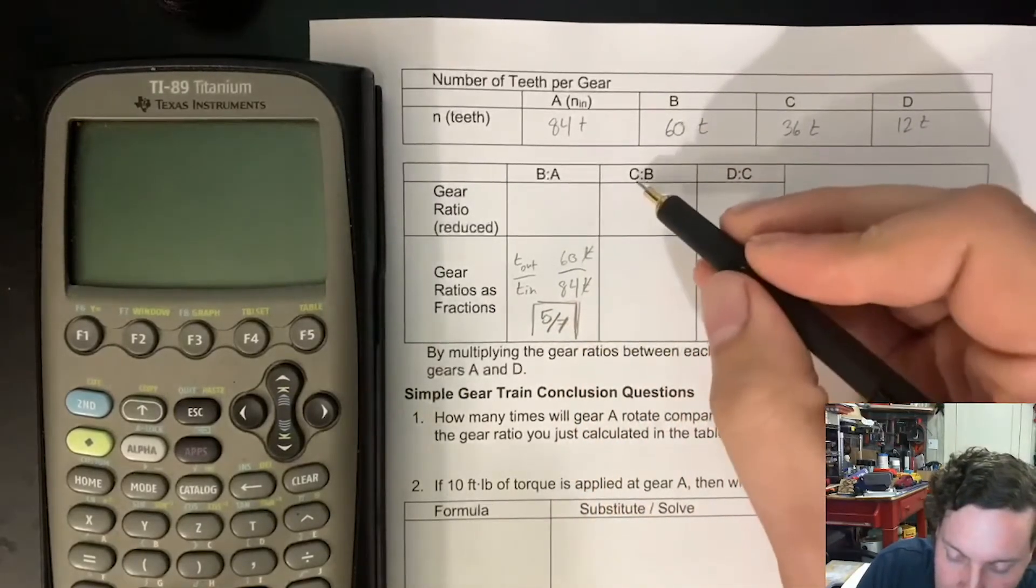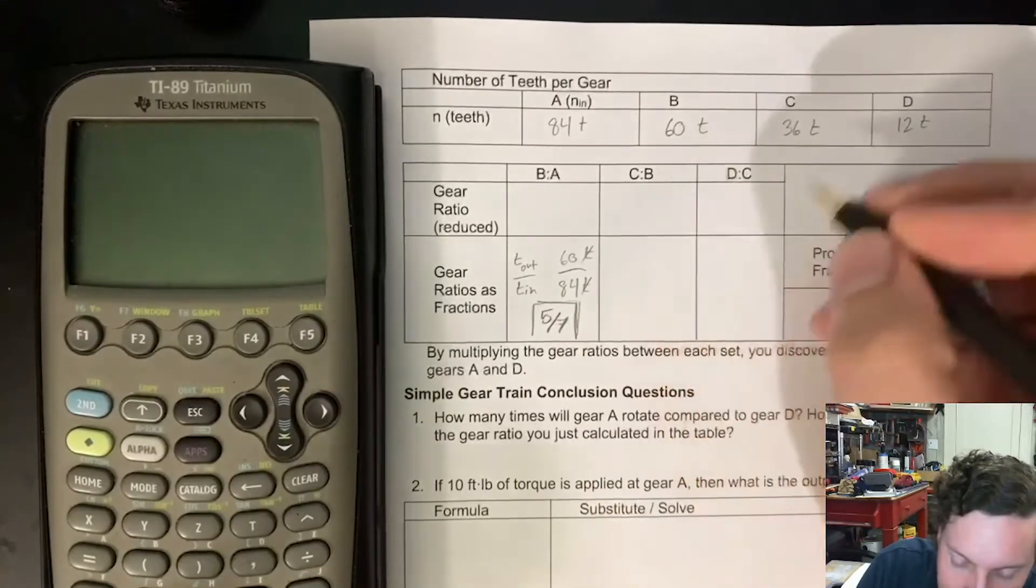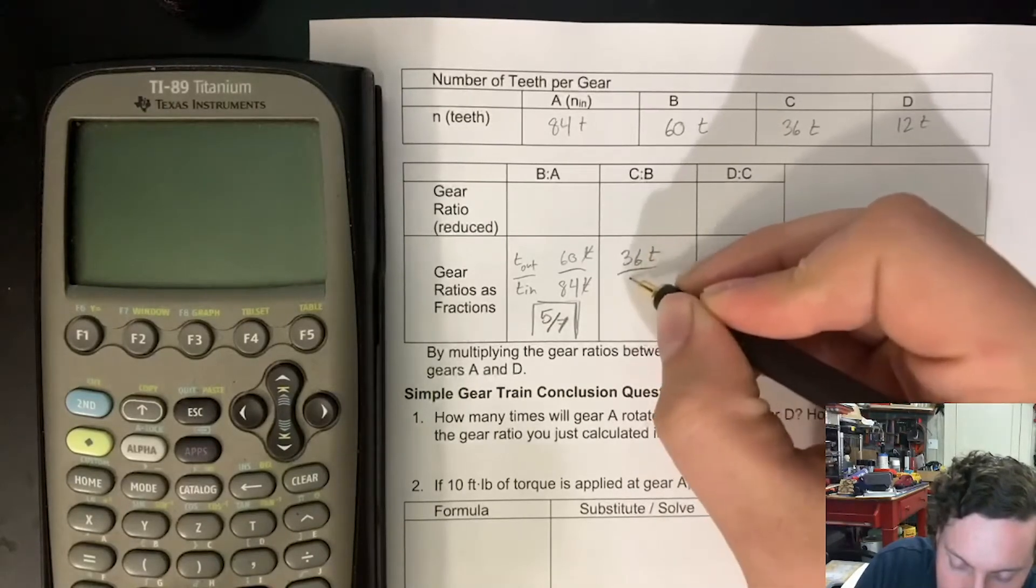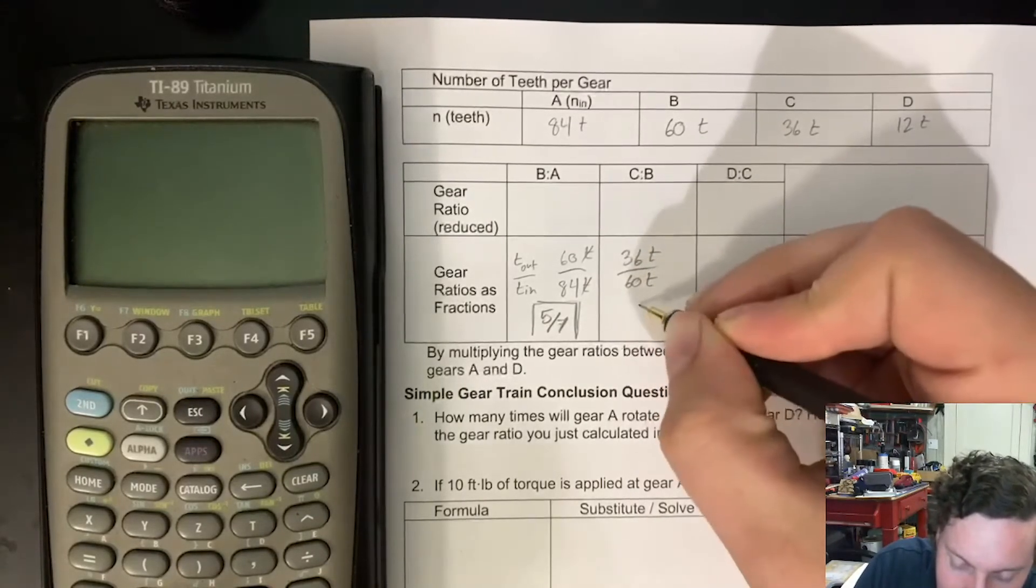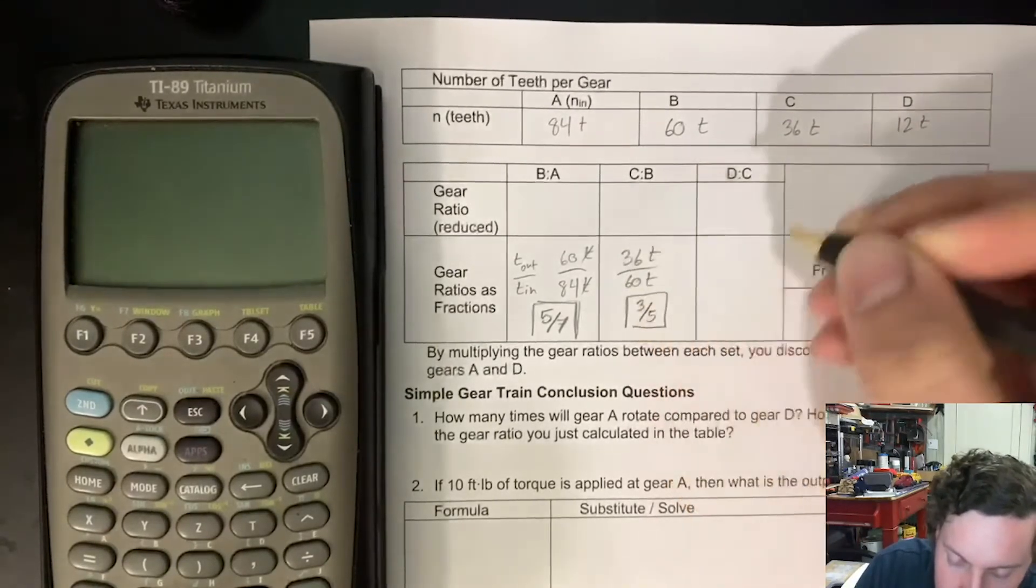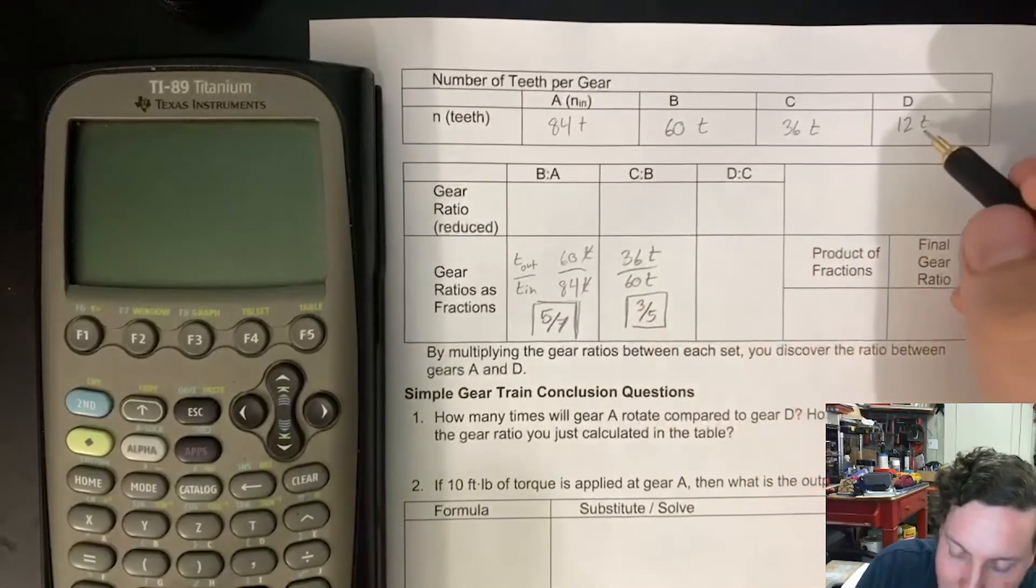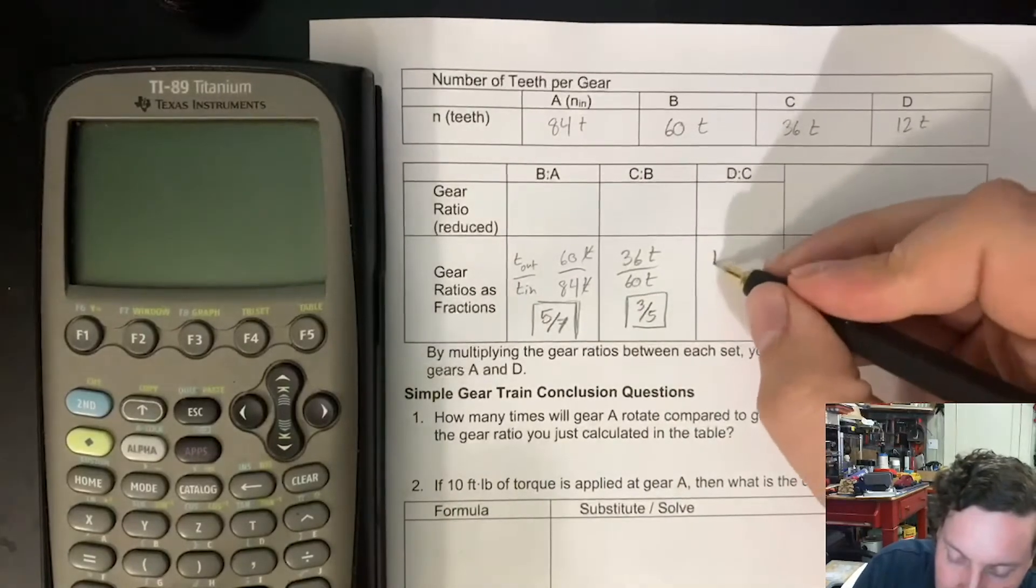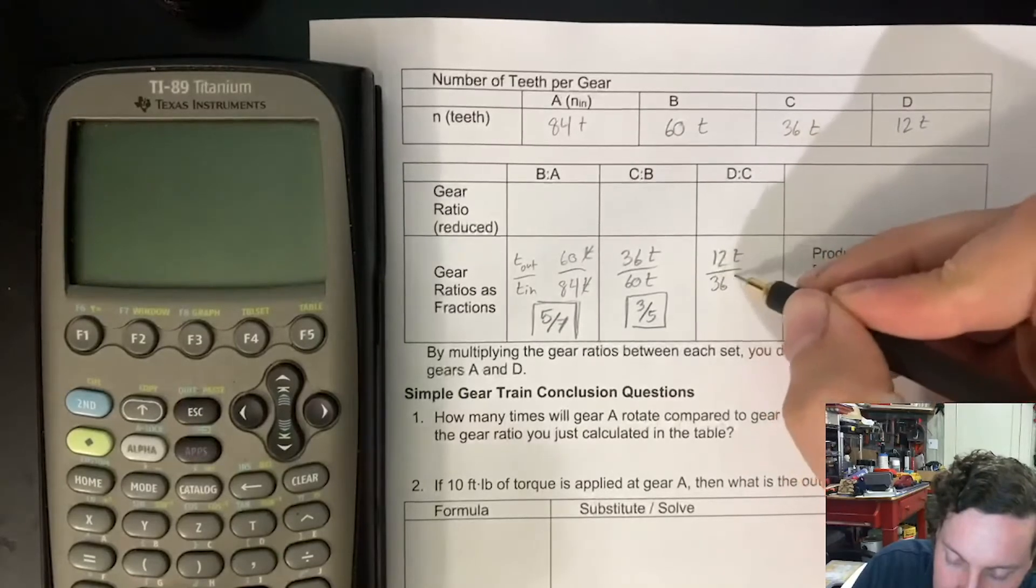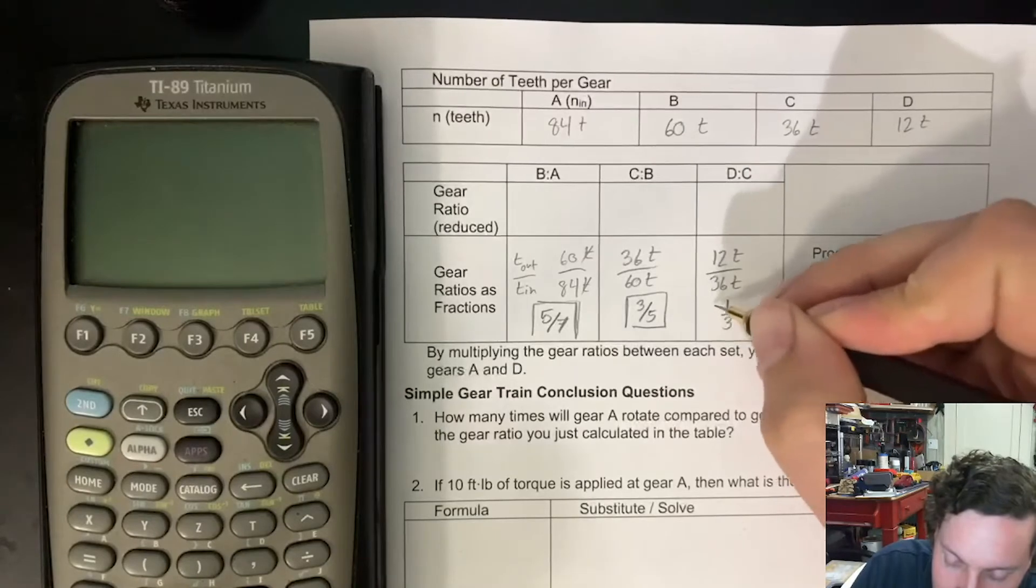For the C:B gear ratio, we're repeating the same process. 36 teeth divided by 60 teeth, simplifying down that's giving us 3 fifths. For C and D, we can tell that D has 12 teeth divided by 36, simplifying that down we are given a 1 to 3 ratio.